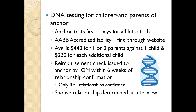Only children and parents have to get DNA testing. The anchor tests first here in the U.S. He pays for the kits and the lab when he goes. He has to go to an AABB-accredited facility — the website with all facilities listed is provided in the letter sent to the anchor when it is time to do this. The average cost is $440 for one or two parents against one child, and an additional $220 for each additional child. Iowa will issue a reimbursement check to the anchor if all relationships are confirmed — they say within six weeks of confirmation. The spouse relationship is not determined by DNA — that is addressed at the interview.